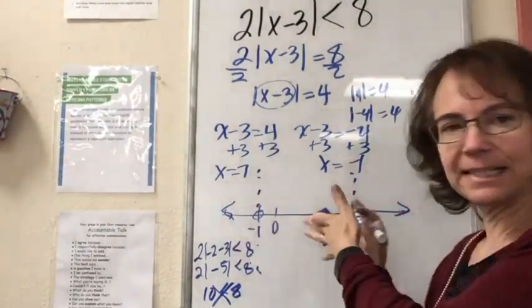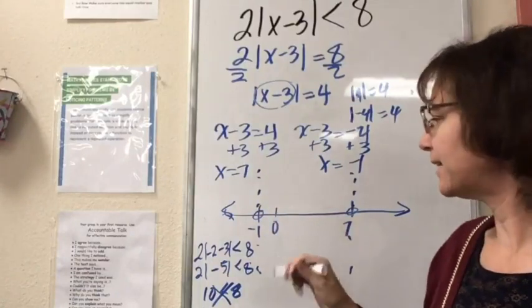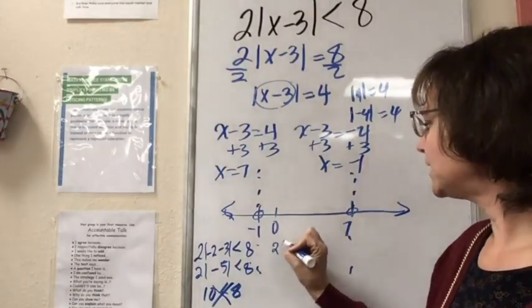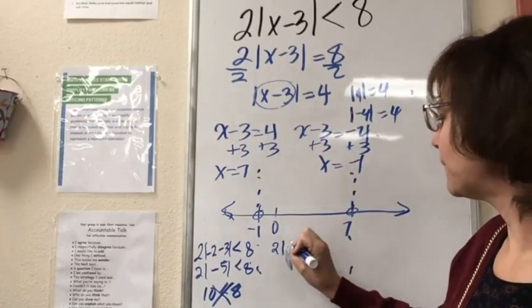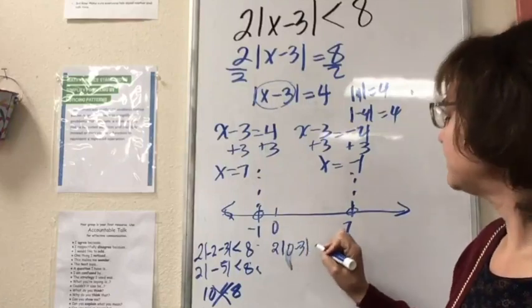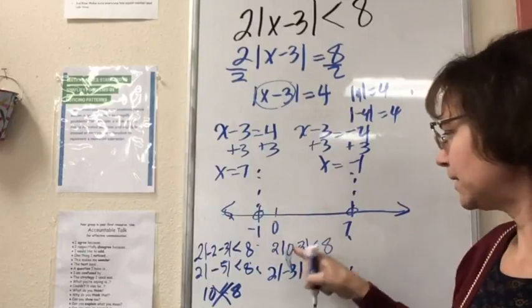My guess is it's going to be inside here. So let's test zero. Zero is in between negative 1 and 7. So I have 2|0-3|, and I'm testing to see if that's less than 8.